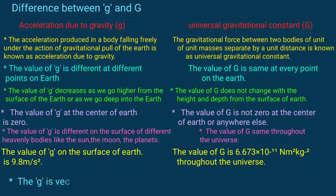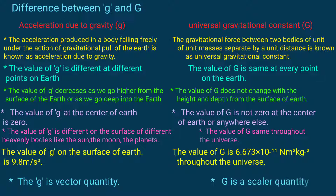The g, that is acceleration due to gravity, is a vector quantity, and G, i.e. universal gravitational constant, is a scalar quantity.